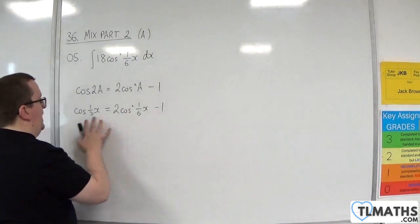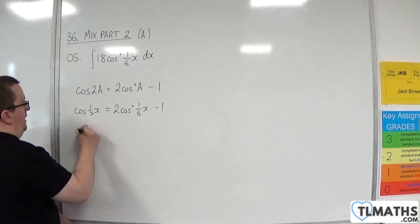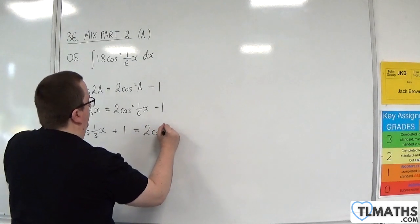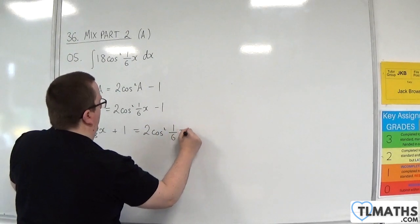If I add the 1 to both sides, we get cosine of one-third x plus 1 is 2 cosine squared of one-sixth x.